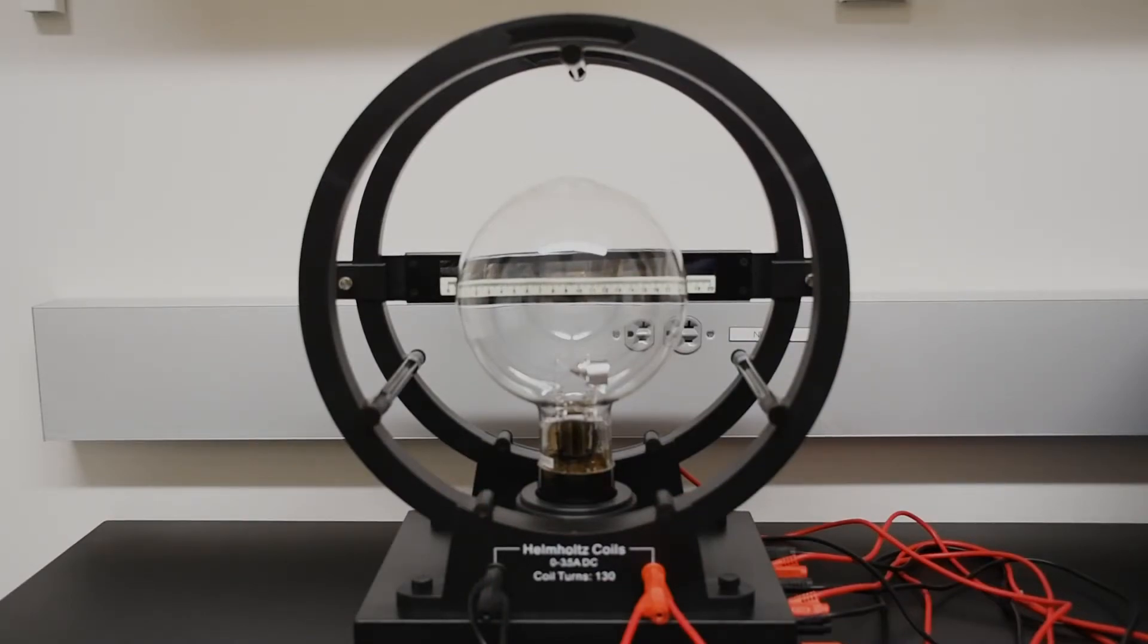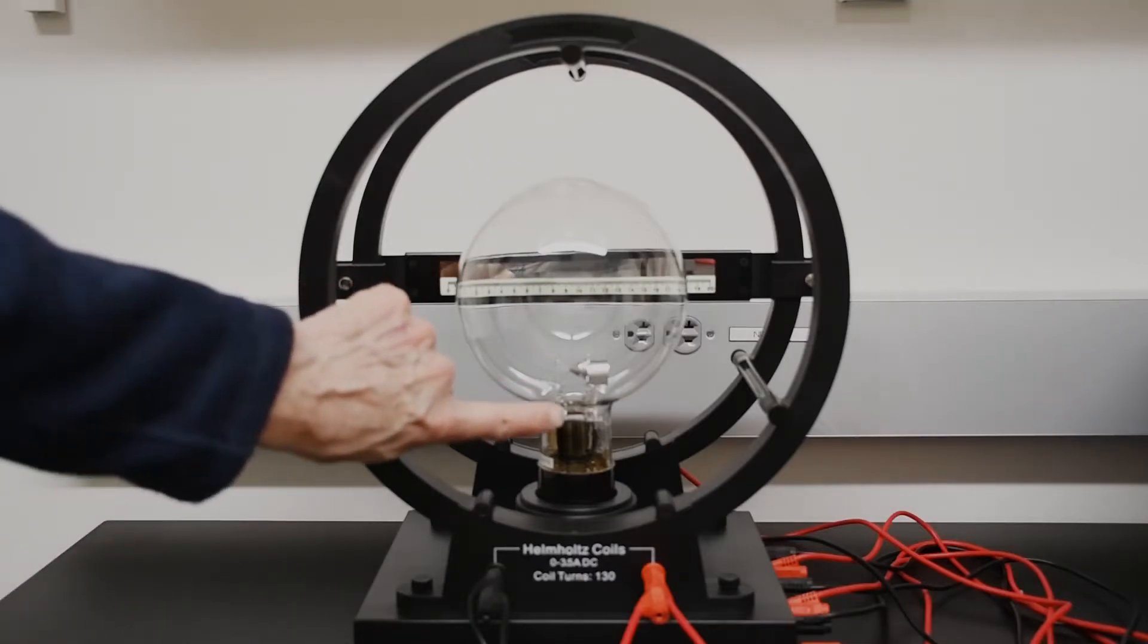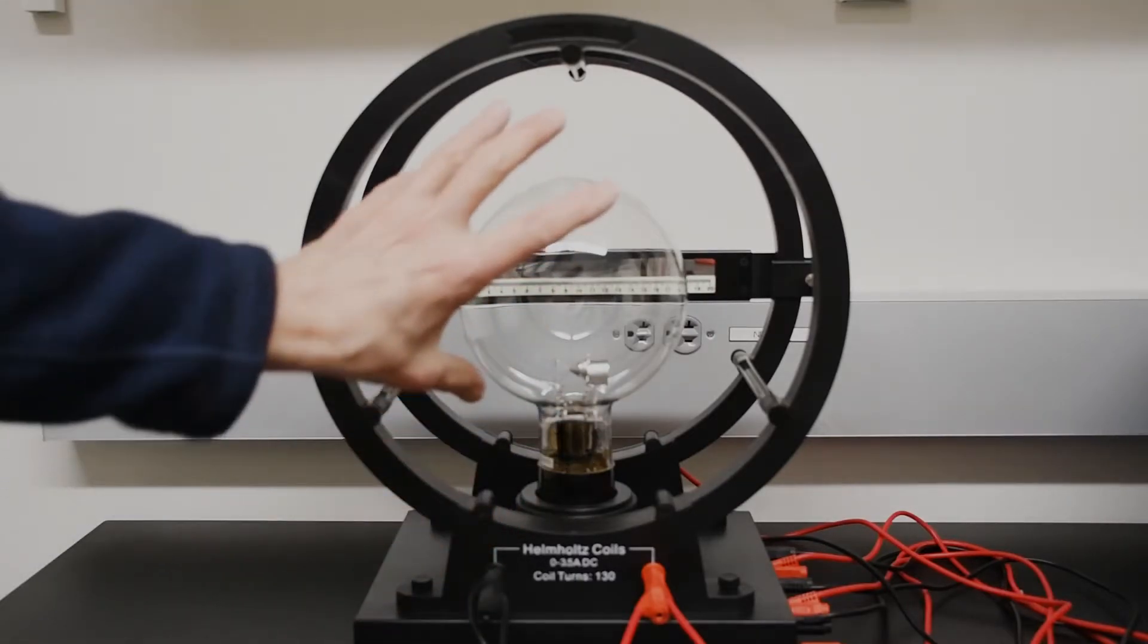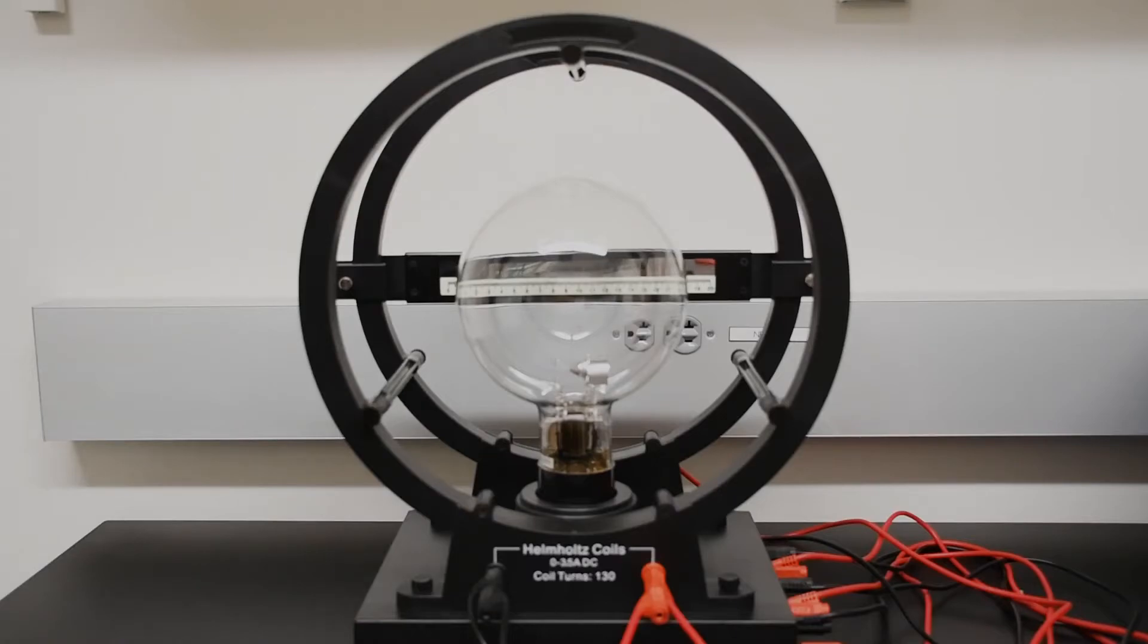So now you can see inside the tube very clearly the electron gun at the bottom. I'm going to point it out here. It's right down there. This globe is evacuated and then filled with gas. And the Helmholtz coils, as you can see from the label, are a pair of coils with 130 turns, and they're designed to handle up to 3 and a half amps of current.